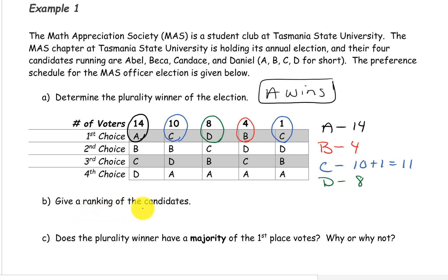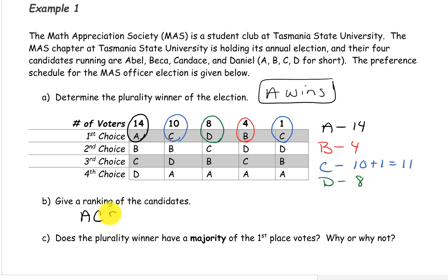Now we want to give a ranking of the candidates — first place, second place, third place, and fourth place for this plurality method. A was in first place with 14 first place votes. Candidate C is next with 11 first place votes. Candidate D is third with 8 first place votes. And lastly, Candidate B with 4 first place votes. So our ranking is A, C, D, B.